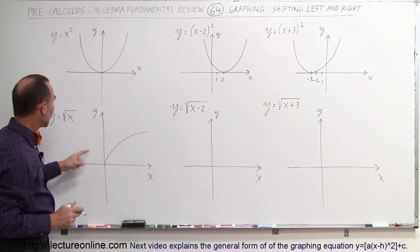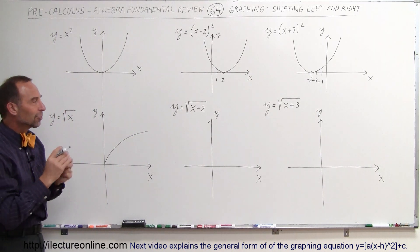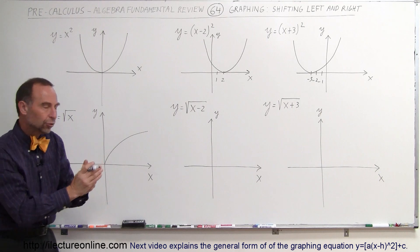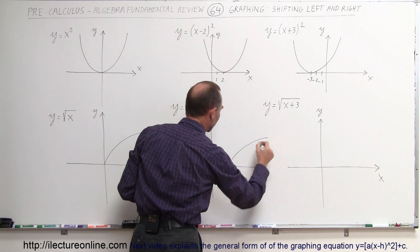Same thing over here. Here we have the graph y equals the square root of x. If we now write y equals the square root of x minus 2, it will shift the whole graph to the right two units. So 1, 2, and that means that the graph will now look like this.